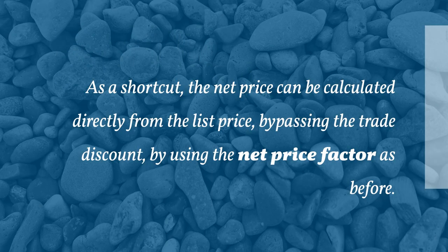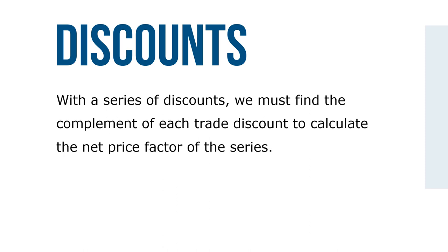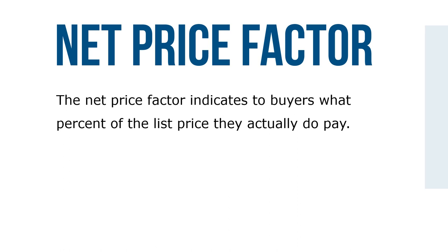As a shortcut, the net price can be calculated directly from the list price by using the net price factor, bypassing the trade discount calculation. Remember, the net price factor is the complement of the trade discount rate. With a series of discounts, we must find the complement of each trade discount to calculate the net price factor of the series. The net price factor indicates to buyers what percent of the list price they actually pay. For example, if the net price factor of a series of discounts is 0.665, the buyer is paying 66.5% of list price.